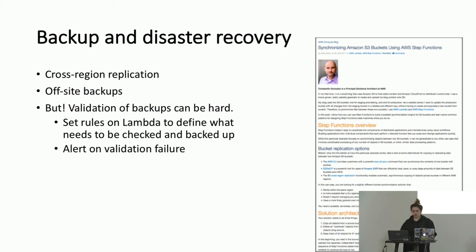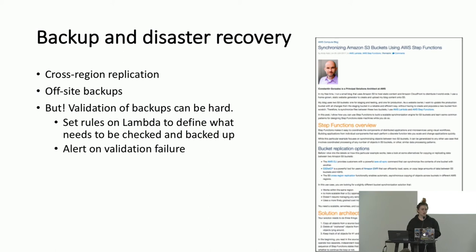Backup and disaster recovery. There are some really cool articles on the compute blog about what people are doing here. Part of the issue with backups is that you never know whether your backup actually works until you've tried to use it — and sometimes you find out in an emergency that it does not work. Part of what people are using Lambda for that is really interesting is setting the rules in Lambda to define what needs to be checked and what needs to be backed up.